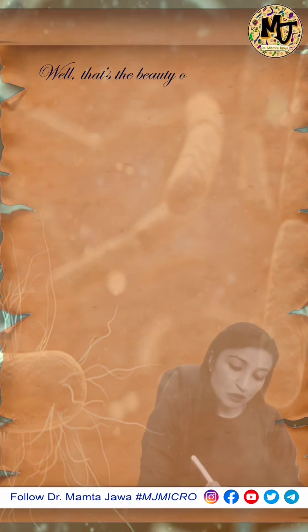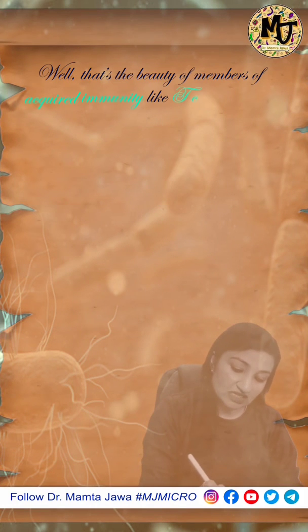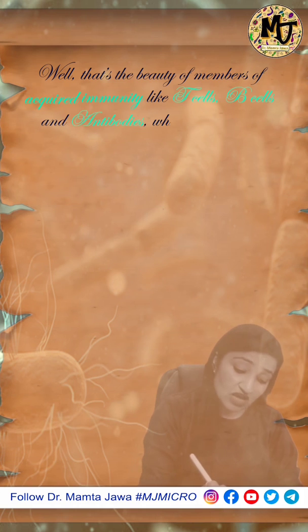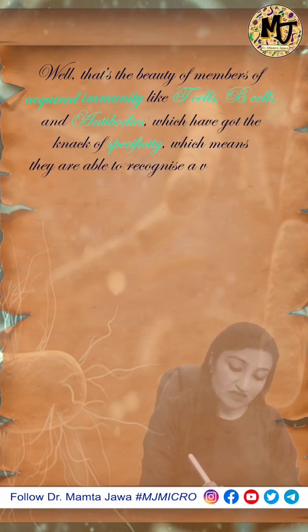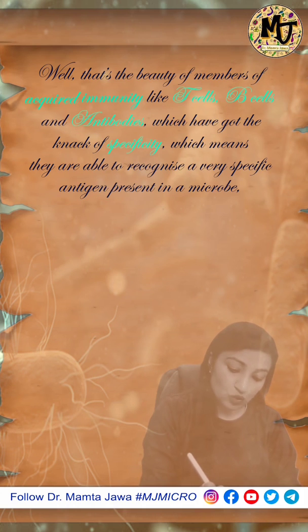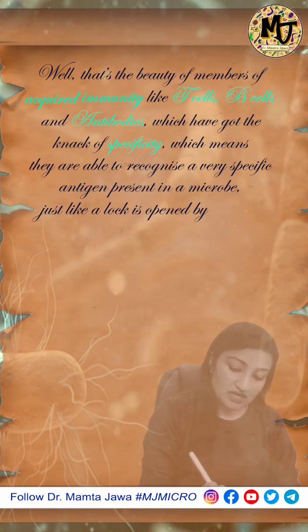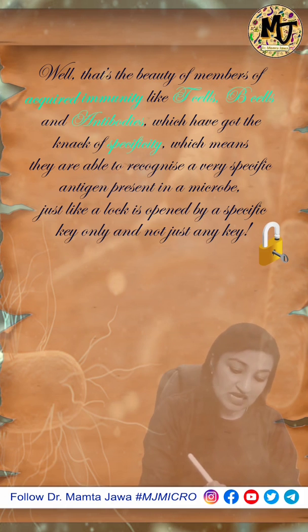That's the beauty of members of acquired immunity like T-cells, B-cells, and antibodies, which have specificity — meaning they are able to recognize a very specific antigen present in a microbe, just like a lock is opened by a specific key only and not just any key.